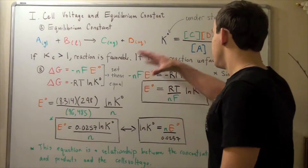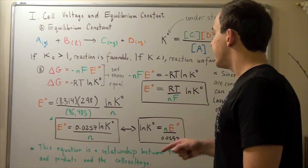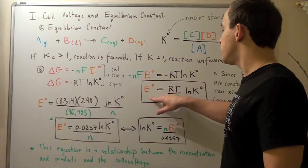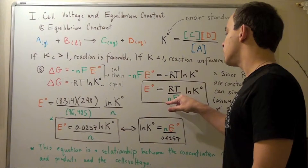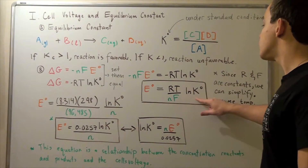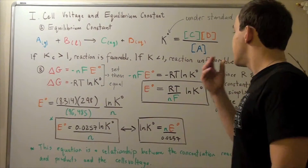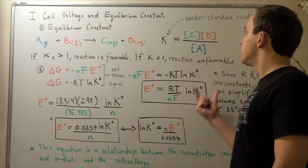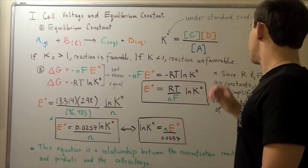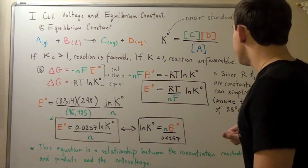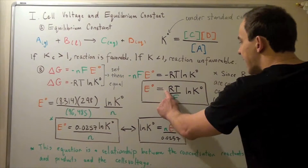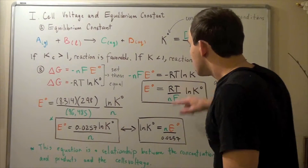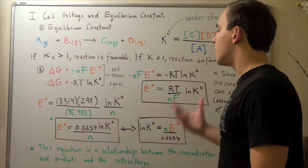We can rearrange this equation and solve for cell voltage. The negatives cancel, and we bring N and F to the other side, giving us: E = (RT / nF) × ln K. This expression relates the cell voltage to the ratio of reactant and product concentrations via the equilibrium constant. In this equation, R and F are constants, and if we assume a constant temperature of 25 degrees Celsius, we can simplify further.